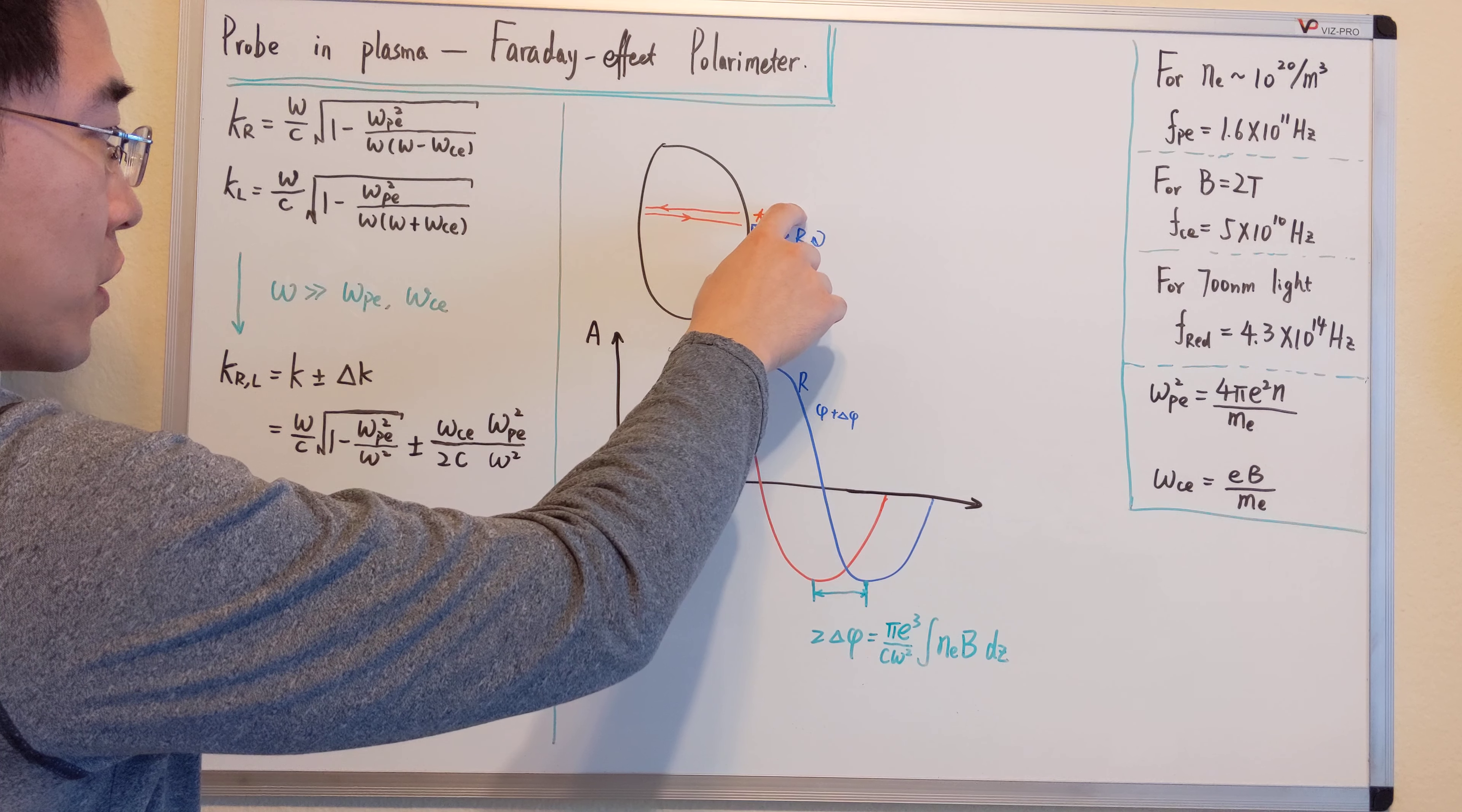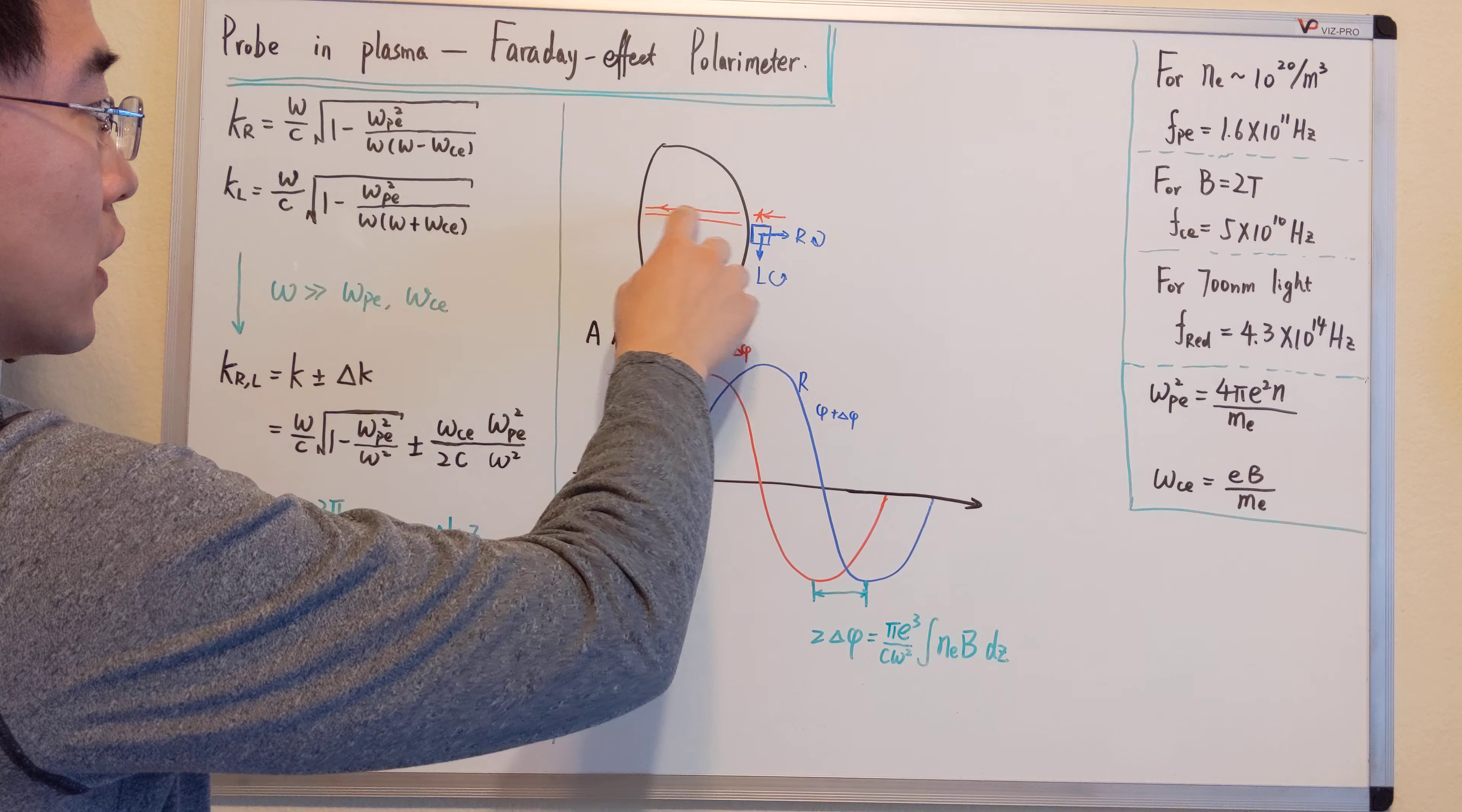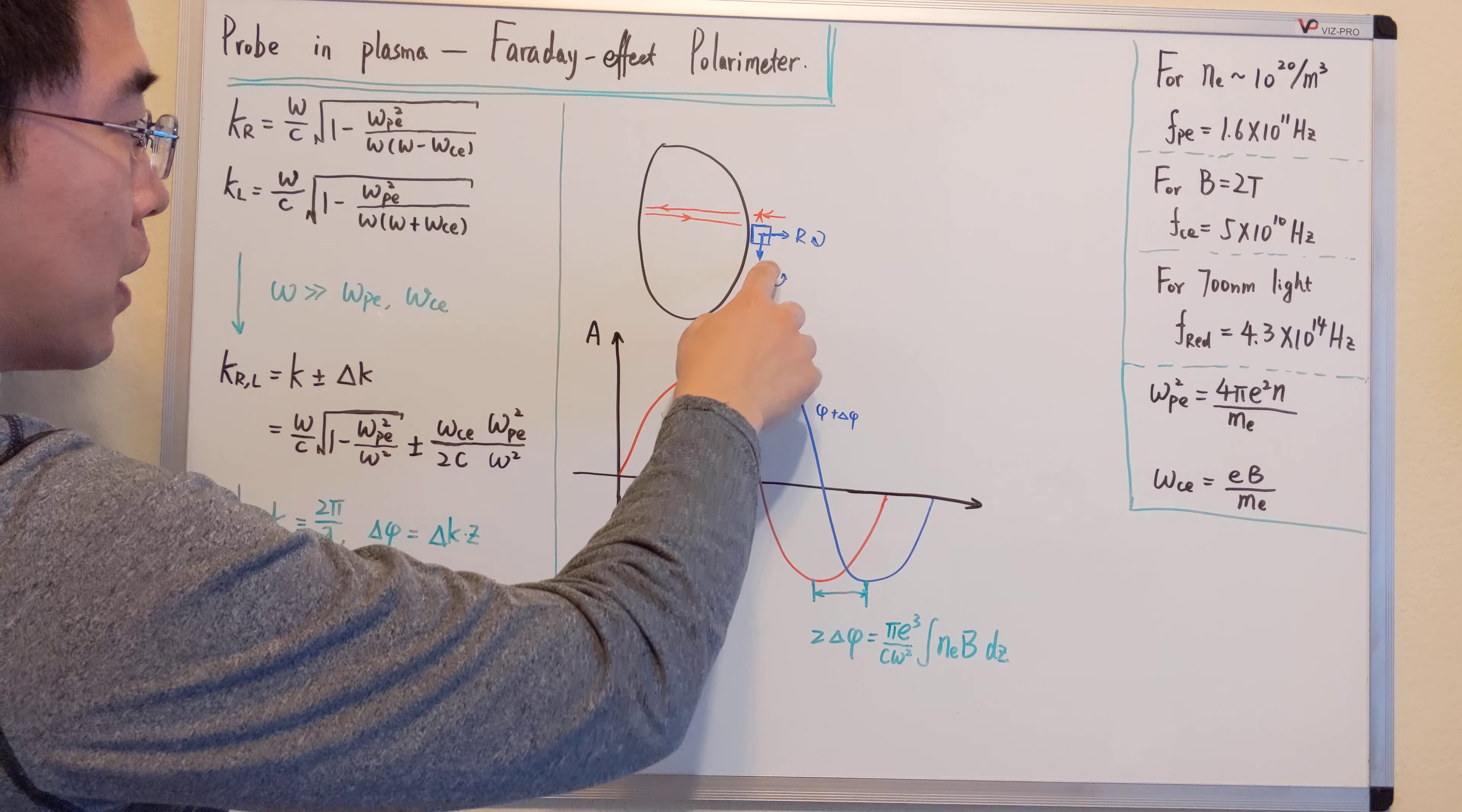So if we put a laser in and it reflects back, and they go to the polarimeter, decompose to the right hand and left hand polarized light.